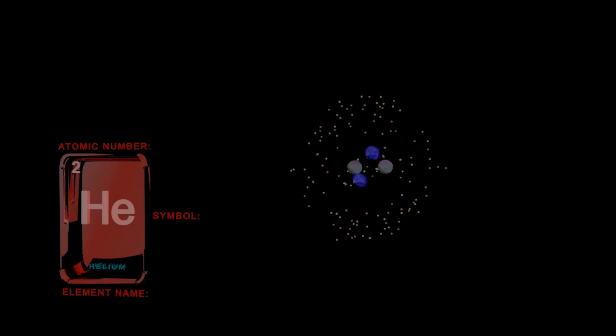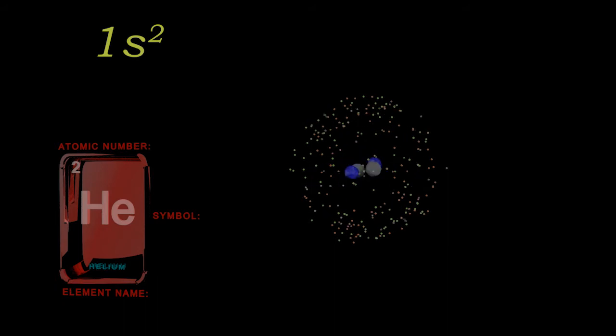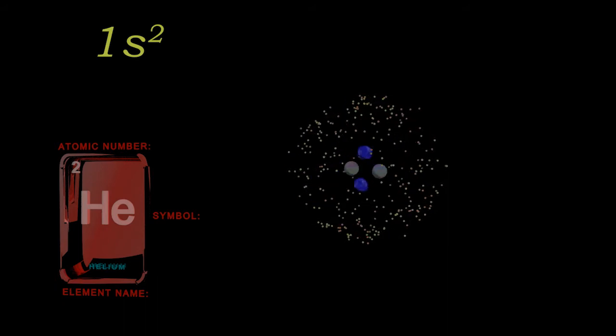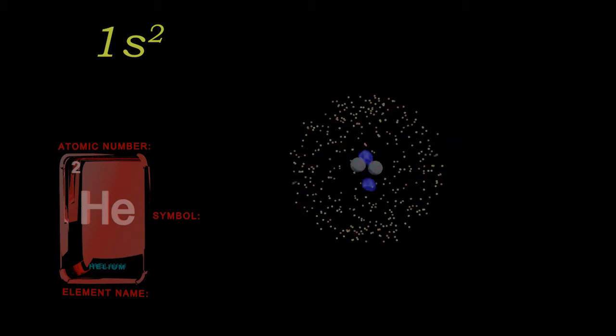Again, we can make out the spherical shape of the principal energy level, n=1, and the 1s orbital. Because of the Pauli Exclusion Principle, we know that the most electrons we can have in one orbital is two.